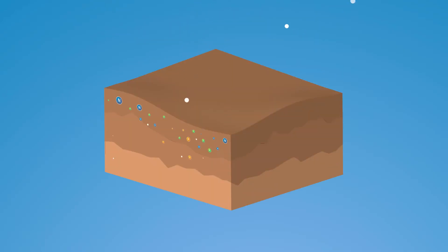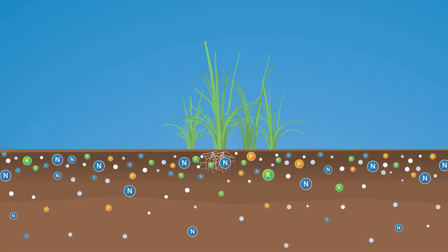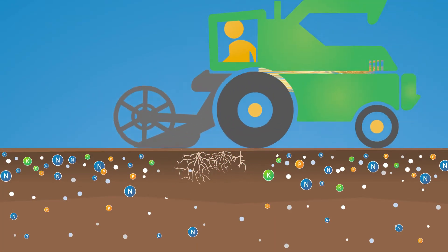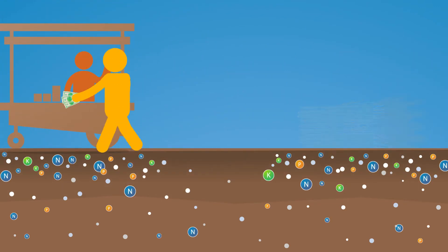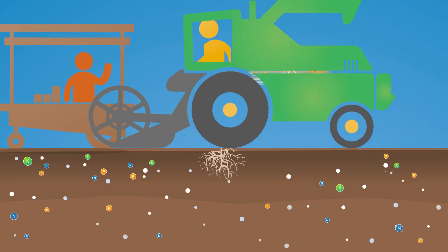Soils are like a bank where nutrients and water are stored. Plants get the nutrients they need from the soil through their roots. If these nutrients are not replaced through the use of fertilizer and organic material, the bank is depleted and the soil will slowly become less fertile.